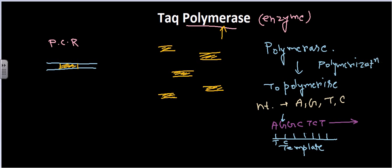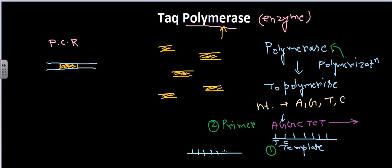This polymerization process is carried out by DNA polymerase. It requires two things: one is the template strand, and another is what is called a primer. So we must have a template DNA with complementary nucleotide sequences, and we also need a primer.